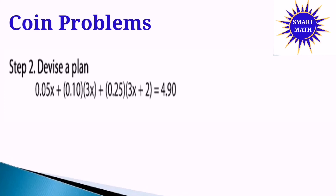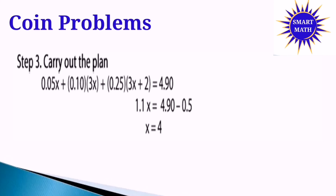Step 2: Devise a plan. Our equation is: 0.05x + 0.10(3x) + 0.25(3x + 2) = 4.90. Note that we write 5 cents as 0.05, 10 cents as 0.10, and 25 cents as 0.25.